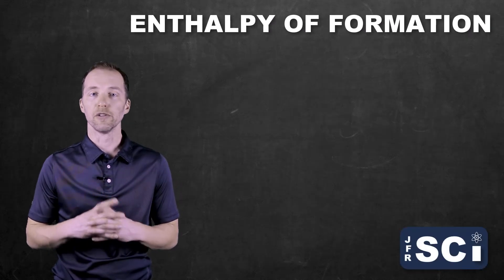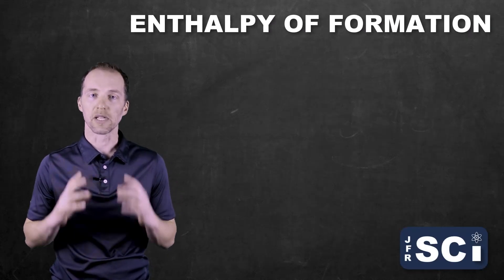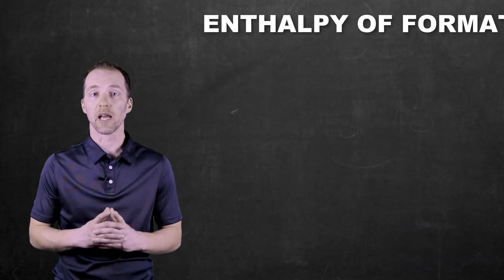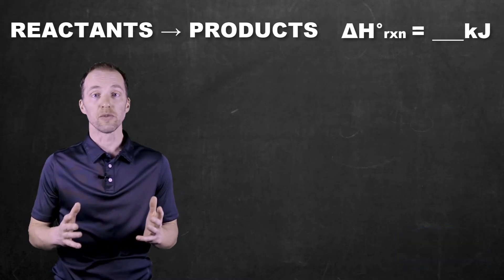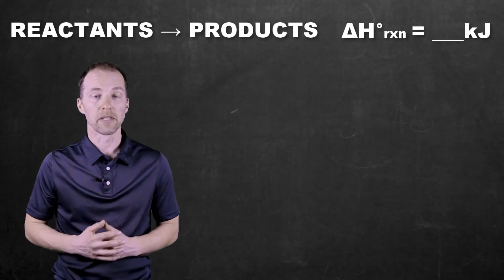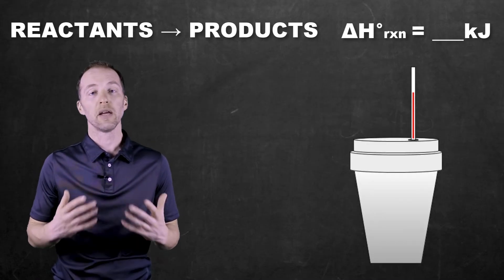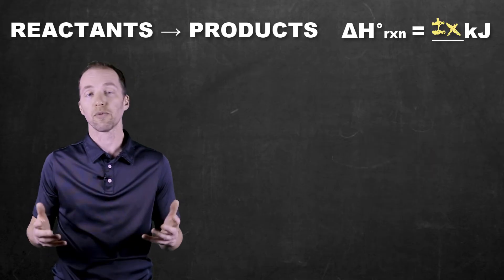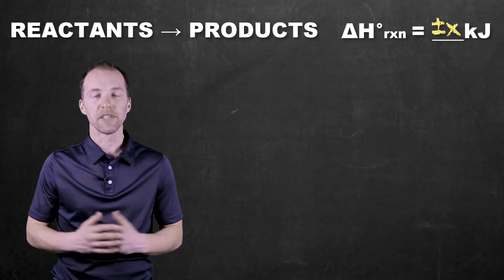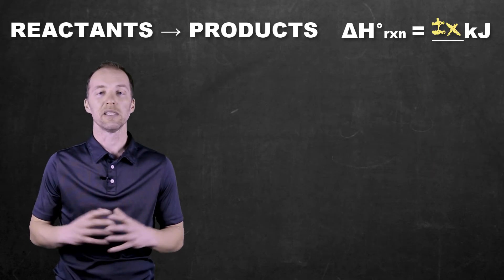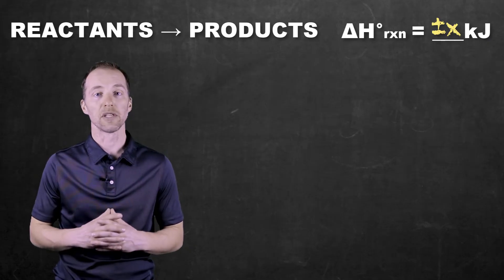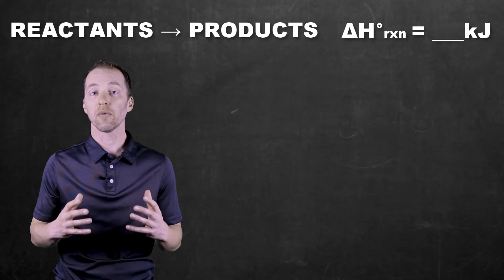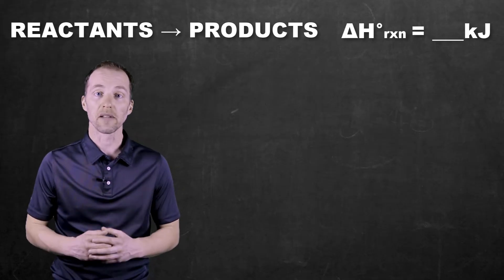If you've been watching these thermochemistry videos, you'll recognize that there are a couple of ways to put a value to the enthalpy change in a chemical reaction. One way is to take empirical, that is experimental, data using calorimetry to figure out the overall enthalpy change for a given chemical reaction in the lab. But there are lots of instances where it's not easy to perform some of these reactions in a laboratory setting, especially in a high school lab, and we have to use another way — something called Hess's Law.